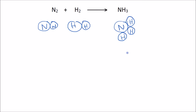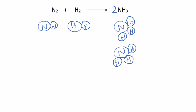We need to balance it because this equation can't work as it is. Let's start by balancing the nitrogens — we've got two on this side and only one here. So if we multiply the ammonia molecule by two, meaning we make another ammonia molecule, now we have our two nitrogens, which is great. But what about the hydrogens now? We now have six hydrogens on the right-hand side and only two on the left.